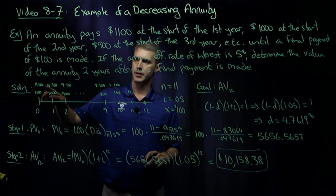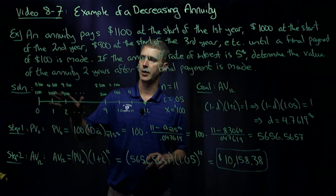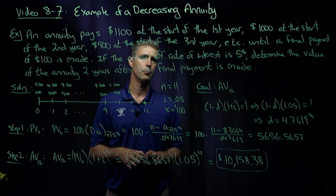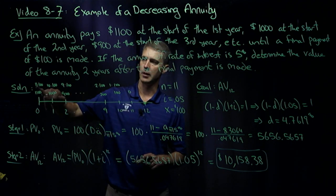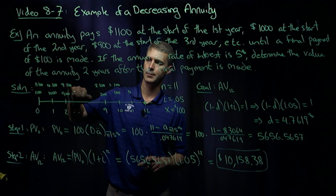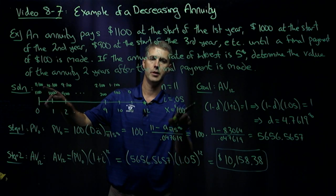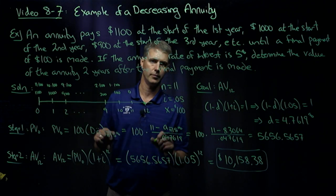So the second line here is clearly illustrating how this decreasing annuity is perfectly fitting the formula from the previous video. I have 11 copies of 100, 10 copies of 100, 9 copies of 100, all the way down to one copy of 100. So my X is 100, my N is 11.